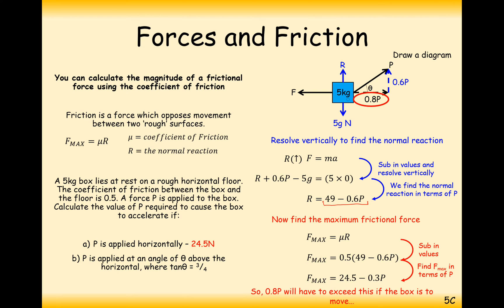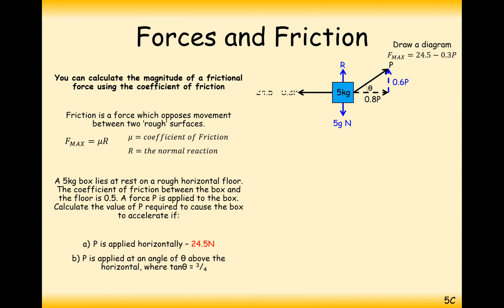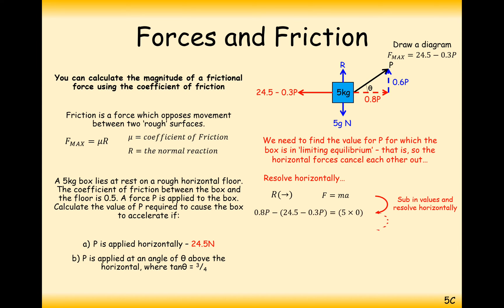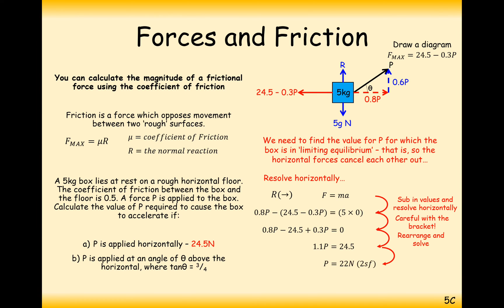For the particle to move, the horizontal component 0.8P must exceed the friction force of 24.5 minus 0.3P. Resolving horizontally: 0.8P minus (24.5 minus 0.3P) equals zero at the limiting case. This gives 1.1P equals 24.5, so P equals 22 newtons. Interestingly, it's more efficient to pull at an angle because the upward component relieves some of the friction acting on the particle.